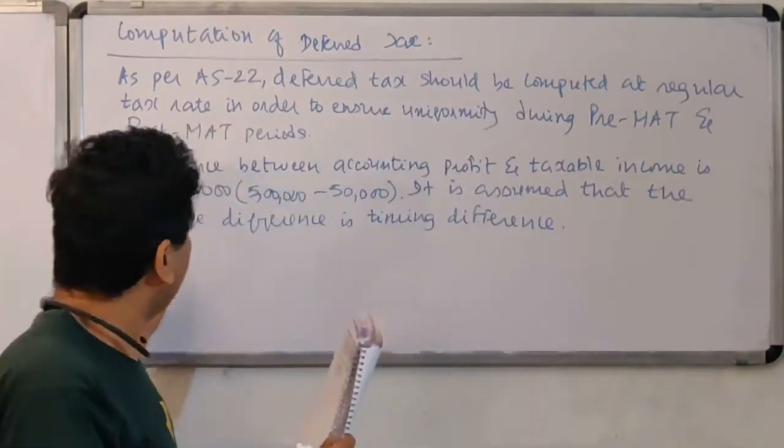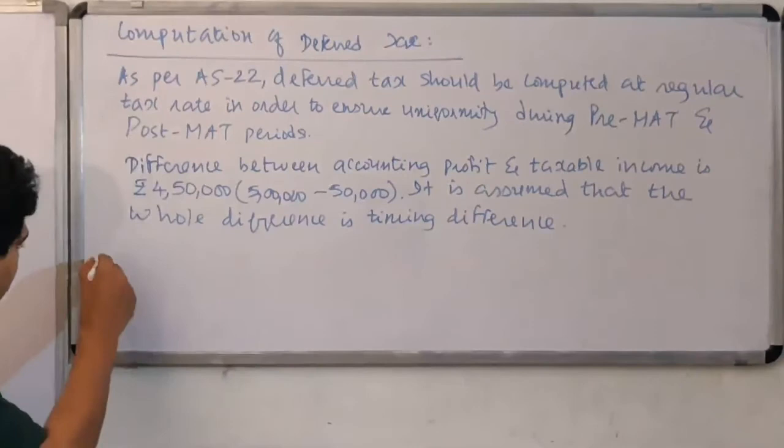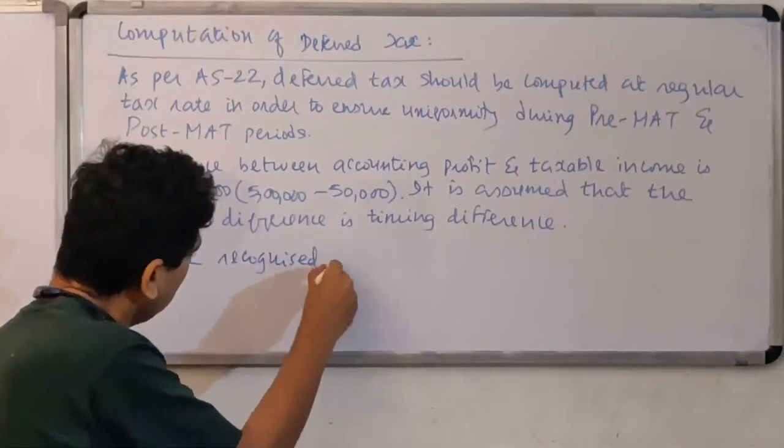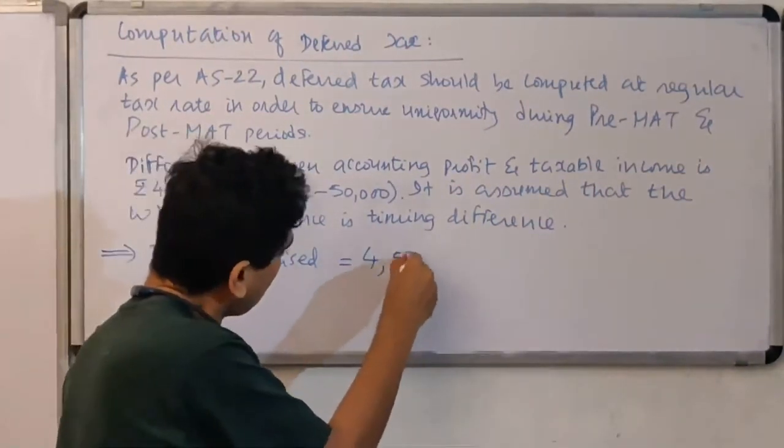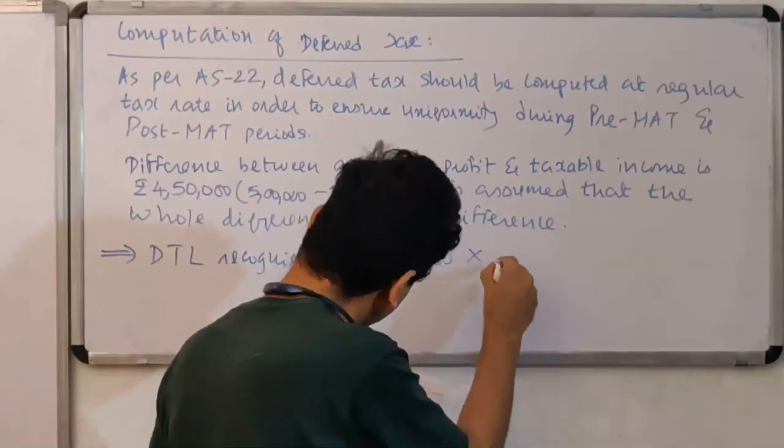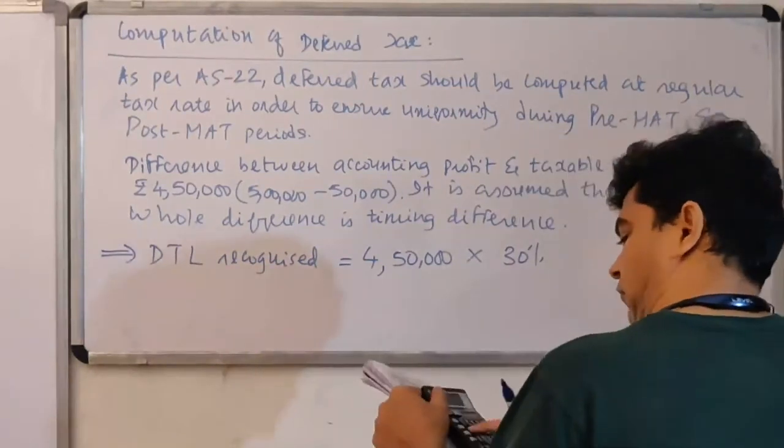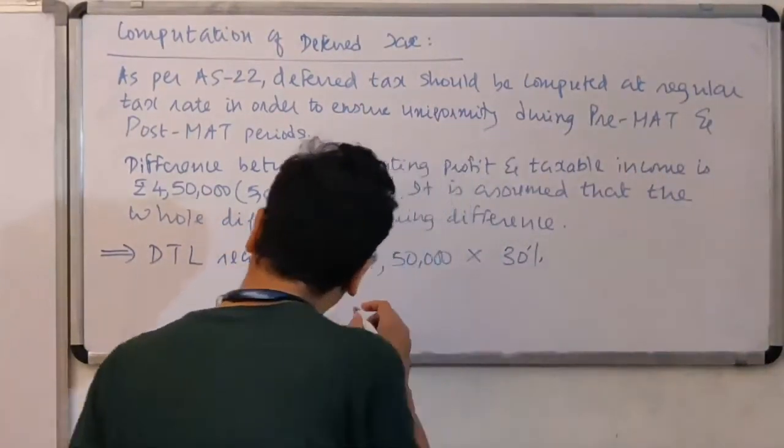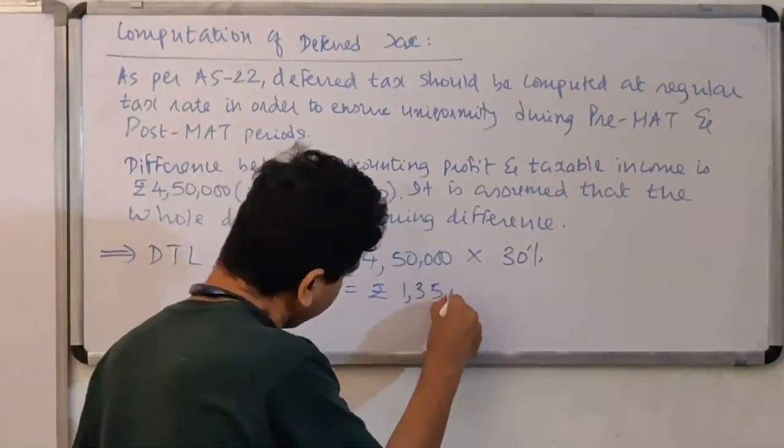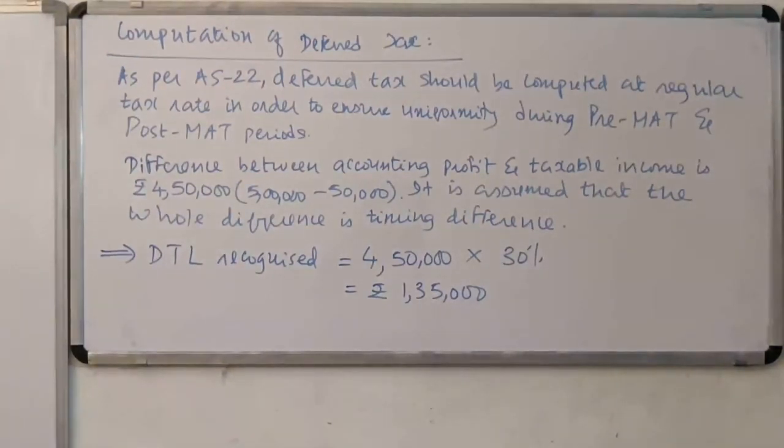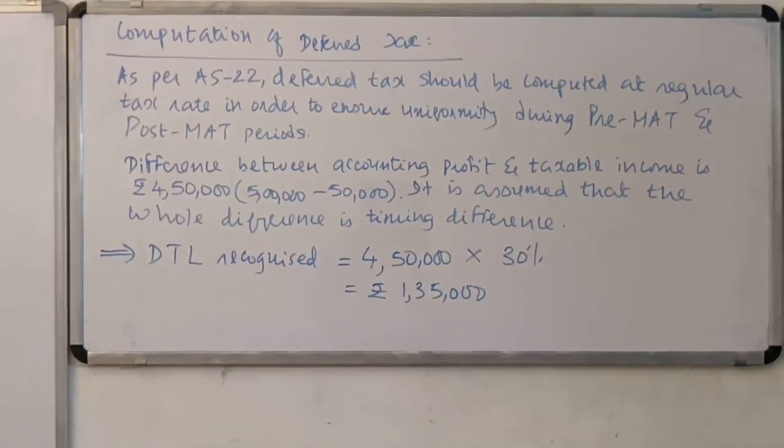So I am saying that there is a timing difference of 4 lakh 50,000. We say implies deferred tax liability recognized equals to 4 lakh 50,000 into 30%, 4 lakh 50 into 30%, Rupees 1 lakh 35,000. That's my deferred tax. So we answer the question. They are saying calculate the current tax and deferred tax asset or liability. So literally we have a DTL, 1 lakh 35,000.